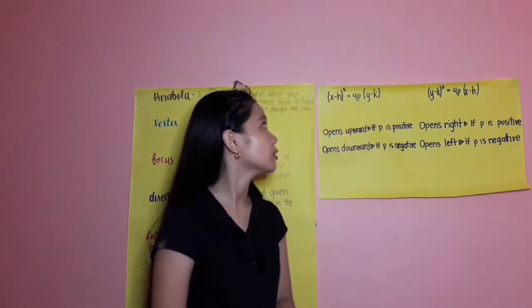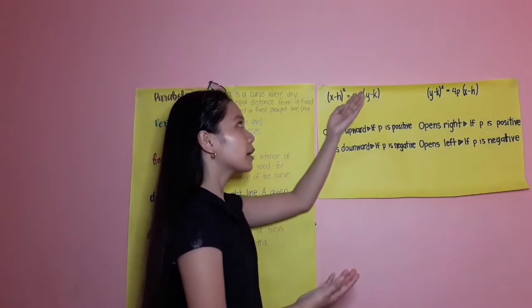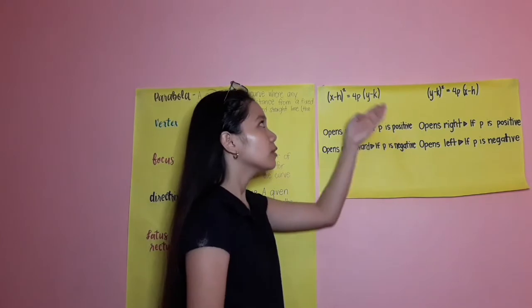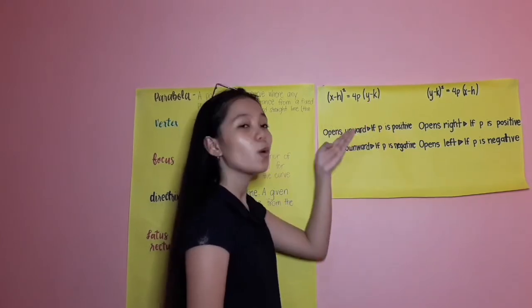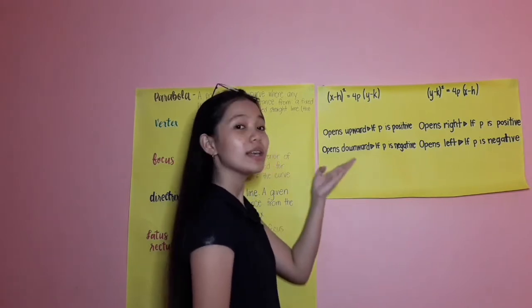Take a look at this equation. If the squared is in the x equation, it's possible that if p is positive, it opens upward. If p is negative, it opens downward.